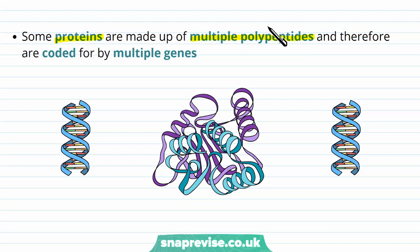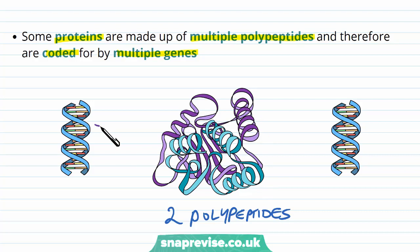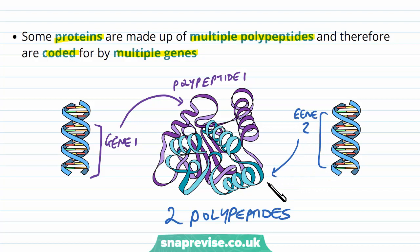For example, we may be talking about a protein which has two polypeptides — one polypeptide in turquoise and one polypeptide in purple. So one gene in the DNA, gene number one, is going to code for polypeptide one. And then elsewhere in the genome, we have gene two, and this codes for polypeptide two. So the two genes act together to make these two polypeptides. And as they interact, they make this overall protein, which is made of two polypeptides.